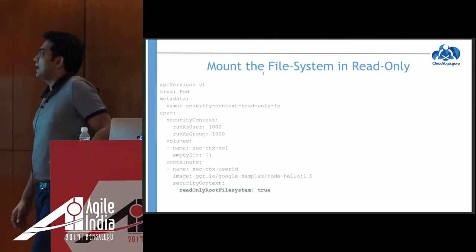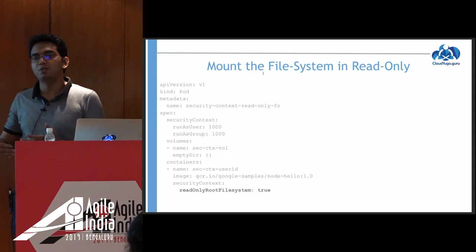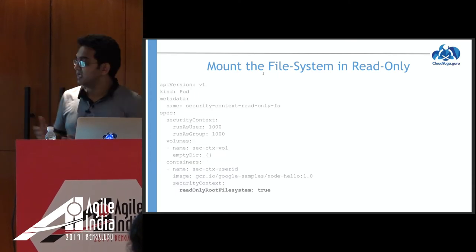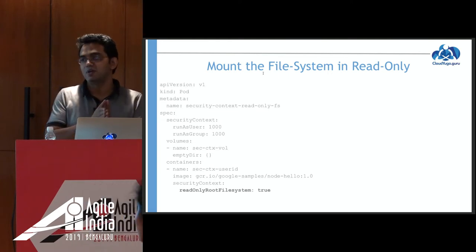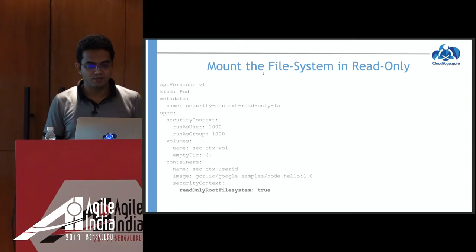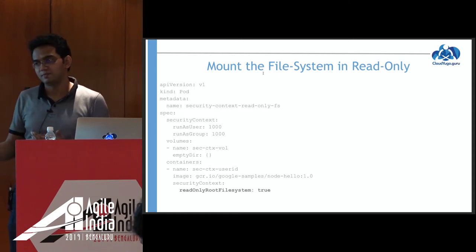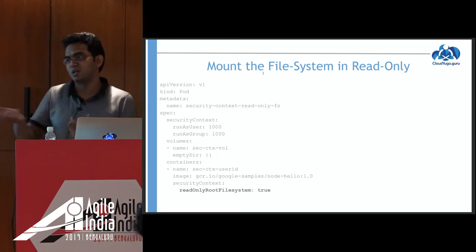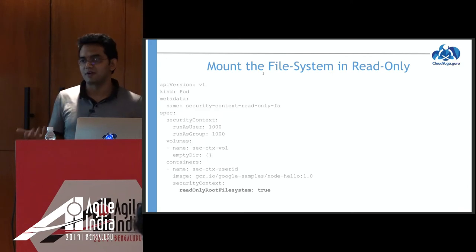Another thing you can do is mount your file system in read-only mode. When deploying your container, you can specify that the container root file system is in read-only mode. Even if someone gets in, they will not be able to write anything. You can do this at the Docker level and similarly at the Kubernetes level, specifying that your root file system is read-only. If you mount a volume inside the container, that volume would still be writable, so your application can write content into the volume — but the root file system is read-only.